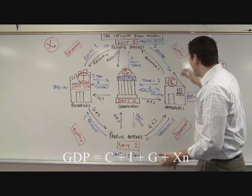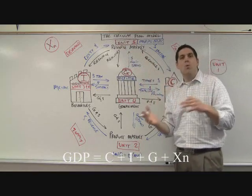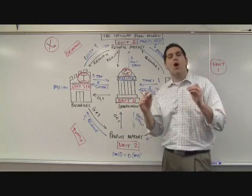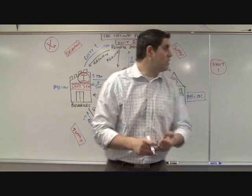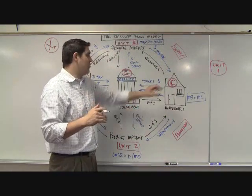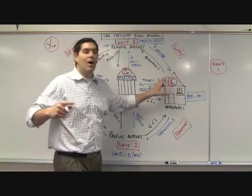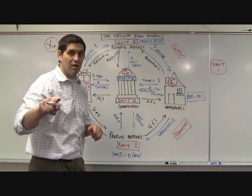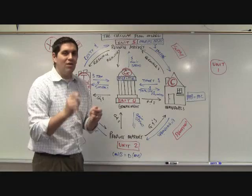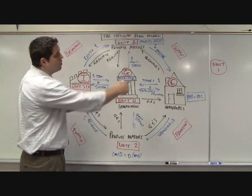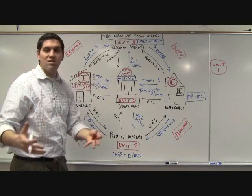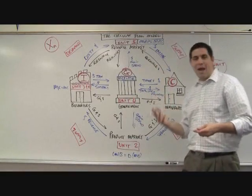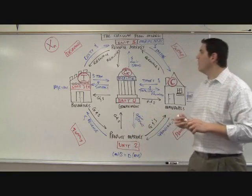Macroeconomics is really simple. All it is is analyzing GDP: C plus I plus G plus XN. Once you add it all up, you figure out how the economy is doing. We talk about unemployment and inflation. Then the rest of the units are about fixing it — fiscal policy covers how the government taxes and spends to solve when consumption is low, and monetary policy controls the money supply to affect the interest rate, focusing on investment and consumption. We'll also talk about foreign exchange and comparative and absolute advantage. That's macroeconomics.